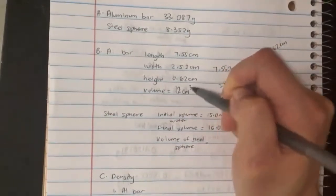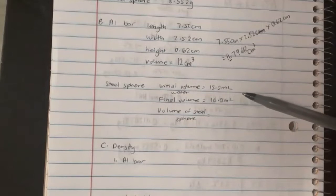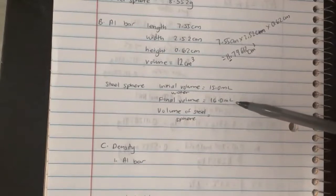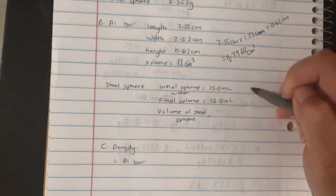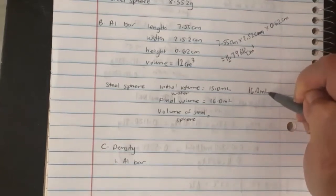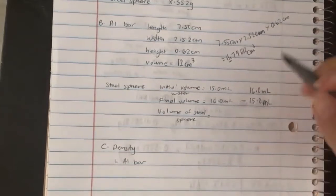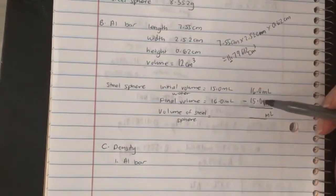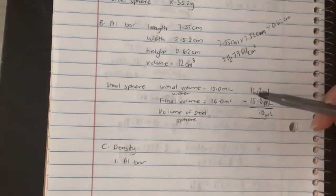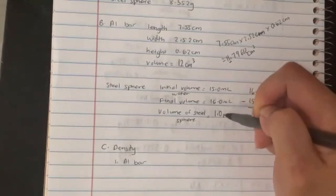For the volume of the steel sphere, you take the final minus the initial, so basically 16.0 minus 15.0. When you subtract, we look at decimal places. 16.0 minus 15.0: one decimal place minus one decimal place, keep one decimal place. 16 minus 15 is 1, so our answer for volume is 1.0.